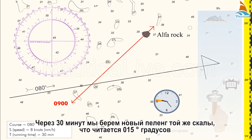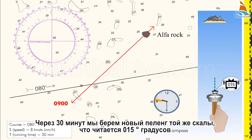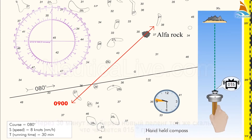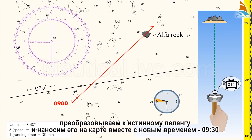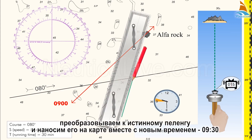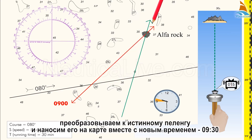After 30 minutes we take a new bearing on the same rock that reads 015 degrees. Now convert the compass bearings to true bearings and plot it on the chart along with the new time, 0930.